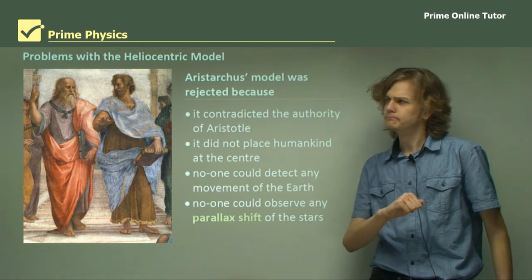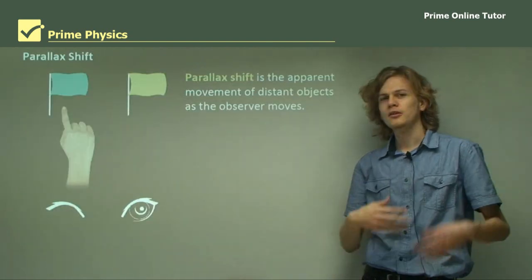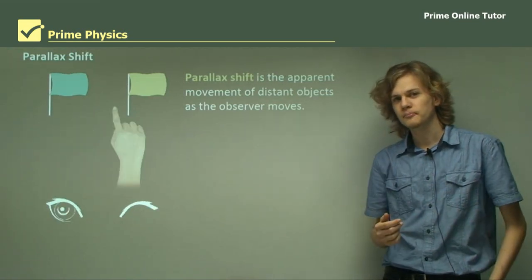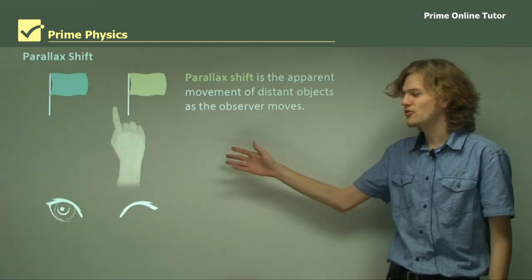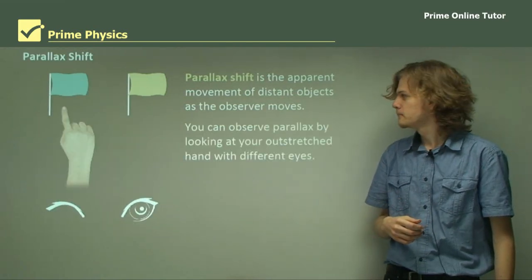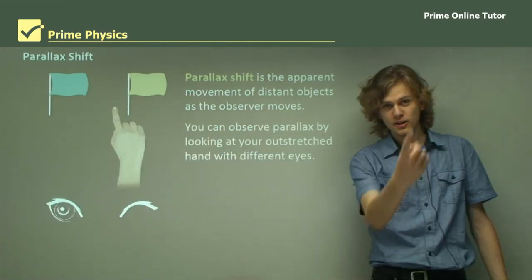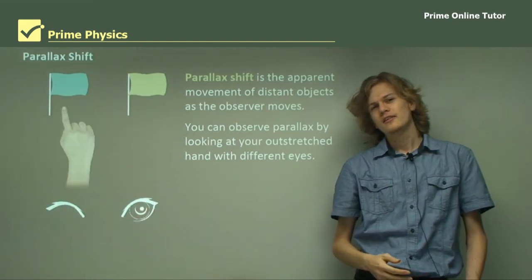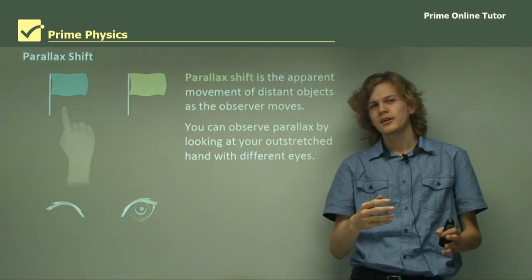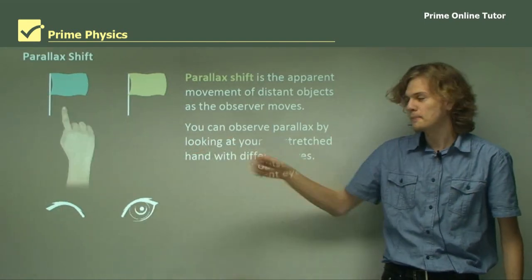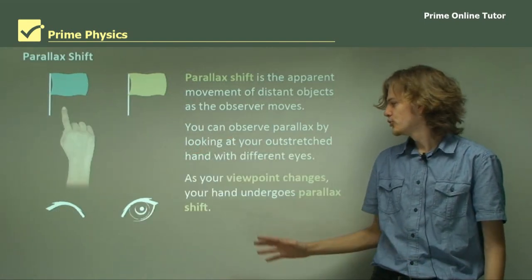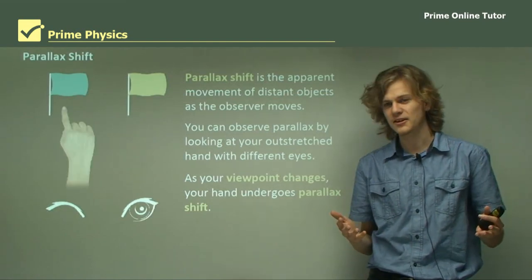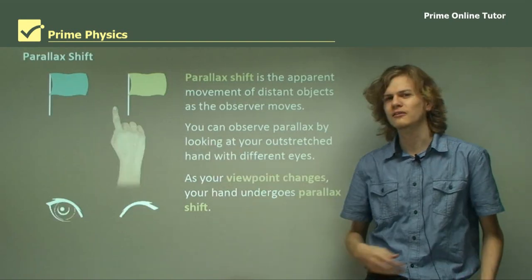So what is parallax shifting? Parallax shift is simply the apparent motion of an object because you're looking at it from a different perspective. We can see an example in this animation. You can observe parallax just by holding your hand up and looking at it with one eye and then the other. You'll notice that compared to a background, it appears to move back and forth. As your viewpoint changes, your hand undergoes parallax shift.